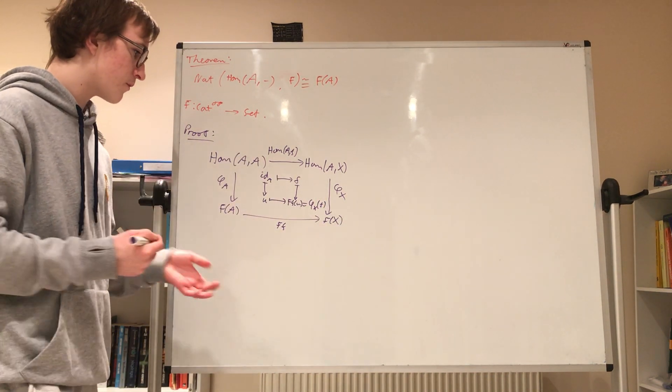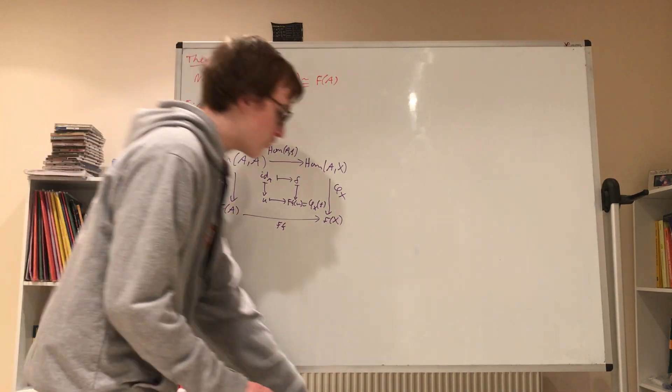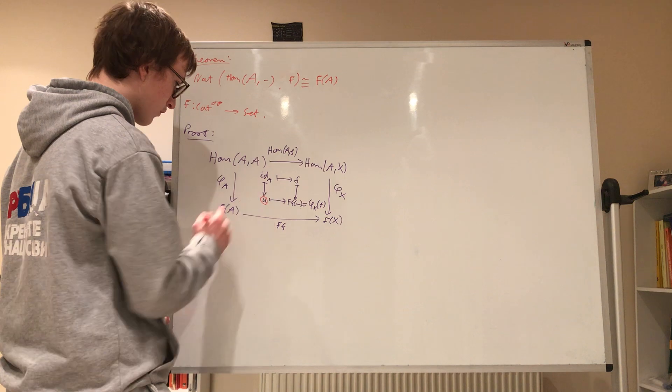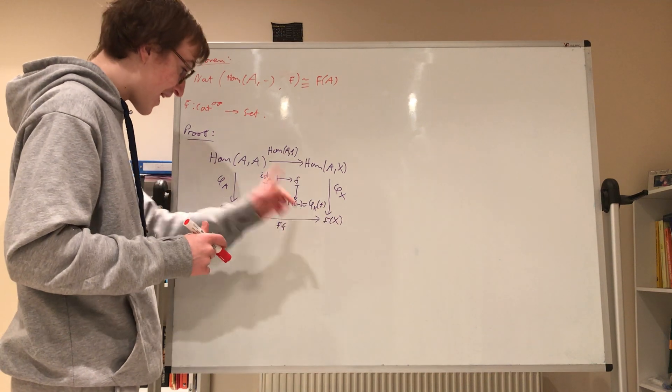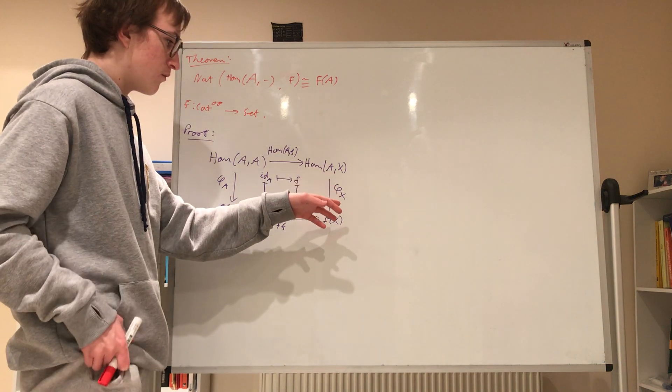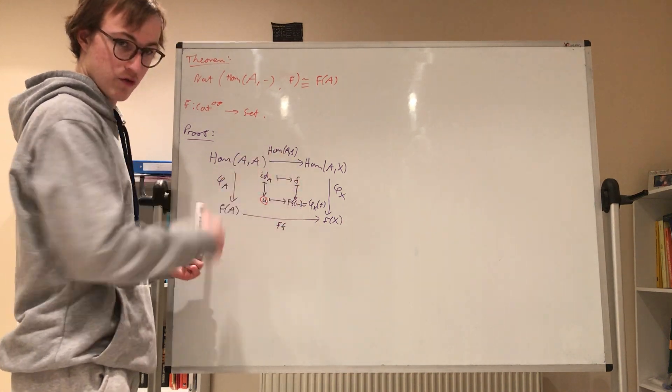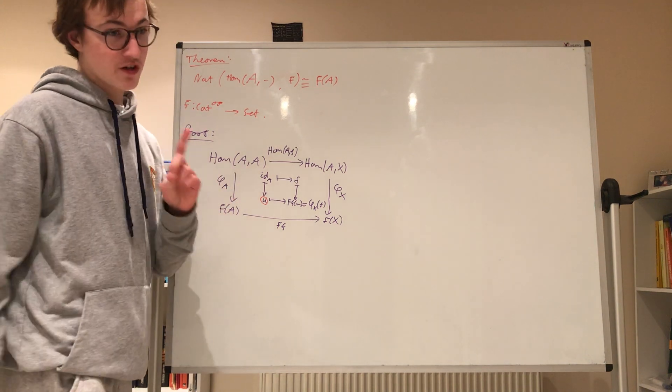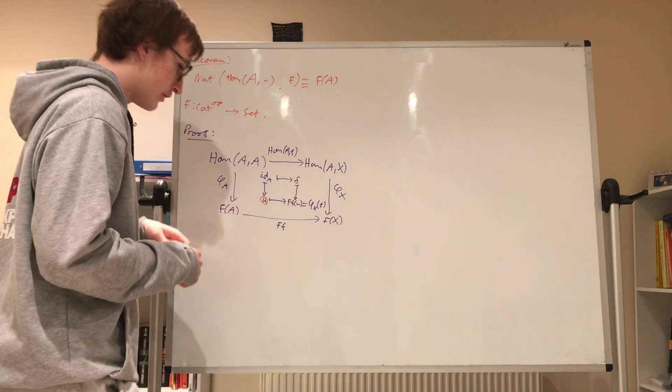And so what we've shown, basically, is that by the commutativity of this diagram, this element U uniquely determines phi_X. For any X, this could be Y, this could be any object, and it's uniquely determined by this U, because it's F(F) of U. So, this is very suspicious, but we need to still make this into a precise bijection, and then we'll be done.